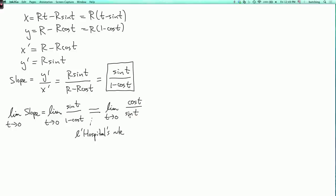Now t equals 0, the denominator is 0, and the numerator is 1, so this is infinite. So that shows that the slope really is going to infinity as t goes to 0.